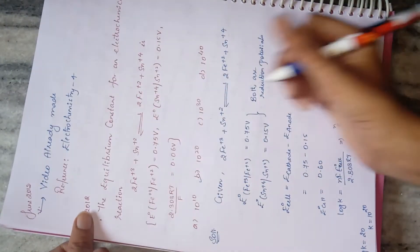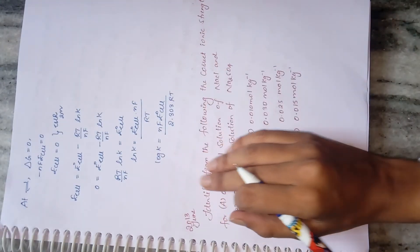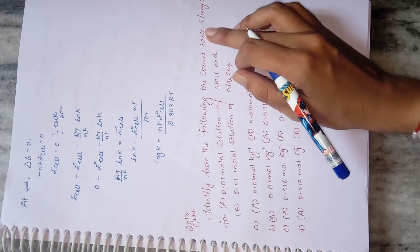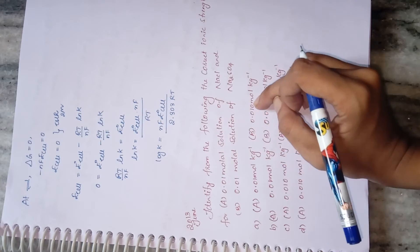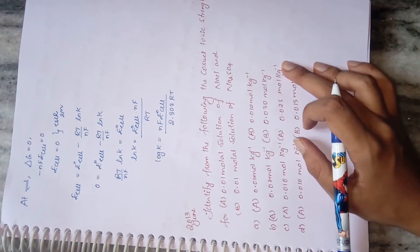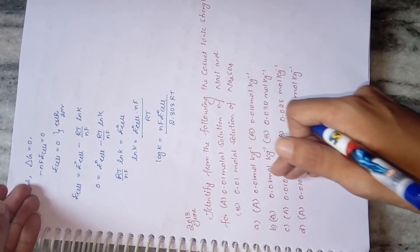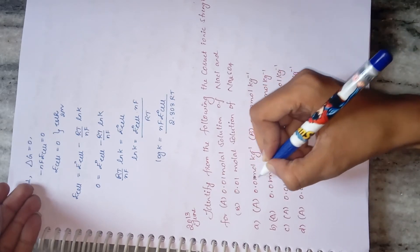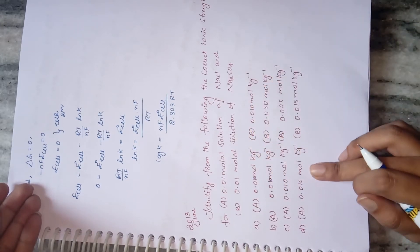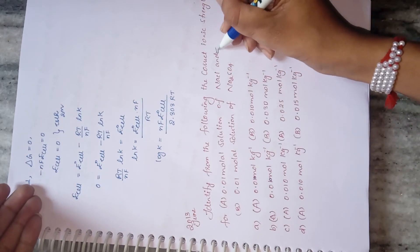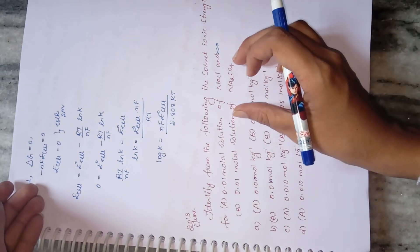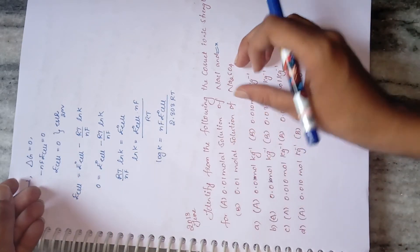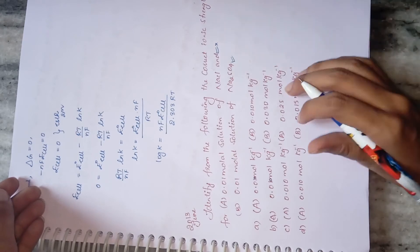June 2013 question: identify the correct ionic strengths. Looking at the options, for option A all four ionic strengths are the same (0.010), so there is no need to calculate for NaCl — jump directly to option B where you must find the ionic strength for Na₂SO₄.